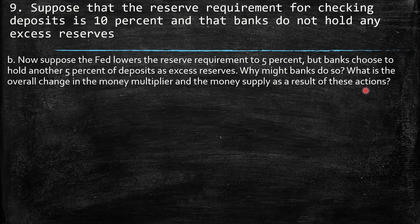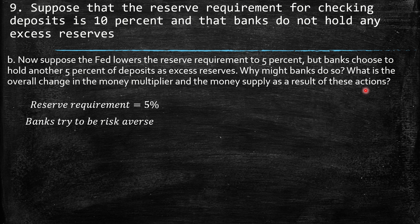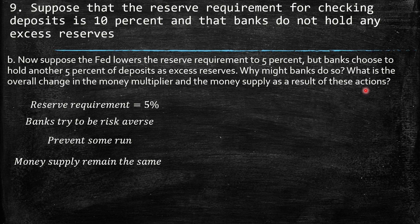Part B: Suppose the Fed lowers the reserve requirement to 5%, but banks choose to hold another 5% of deposits as excess reserves. Why might banks do so, and what is the overall change in the money supply? Banks hold excess reserves to be risk-averse — to prevent a bank run where many customers make withdrawals simultaneously. Since required plus excess reserves still total 10%, the money supply remains exactly the same.